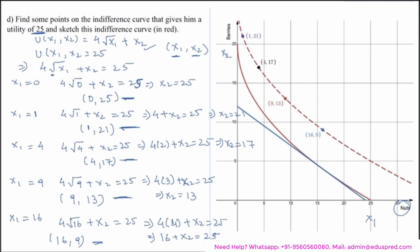Note that the point (0, 25) could not be plotted because it falls outside the graph range — the maximum for berries is 20 and for nuts is 30. Try to keep chosen numbers within the range of your graph to avoid unnecessary calculations. The red curve represents Ambrose's indifference curve giving him a utility of 25, and that was all for this video.